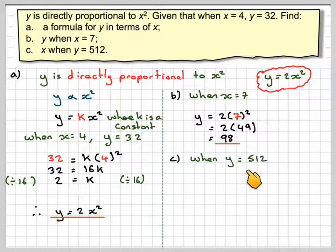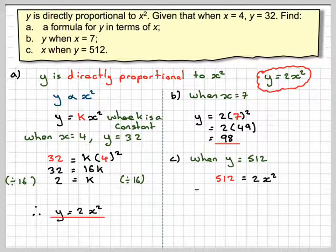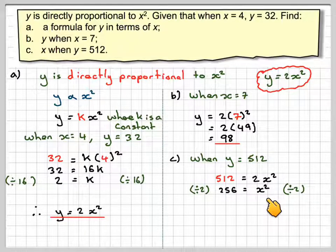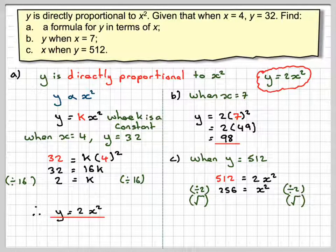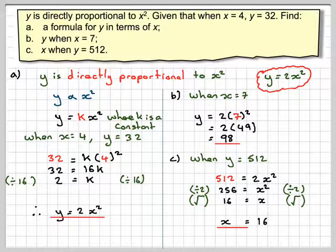When Y is equal to 512, substituting in, we put 512 is equal to 2X squared. Dividing both sides by 2, we're going to get 256 is equal to X squared, and we need to take the square root. We normally just take the positive square root here, and we're going to get that X is equal to 16. The square root of 256 is 16, and therefore X is equal to 16.